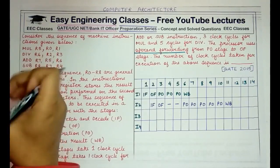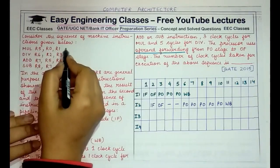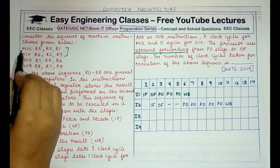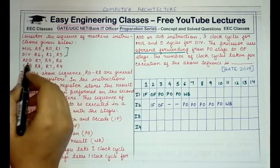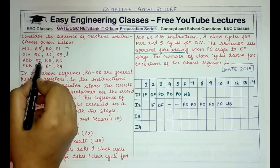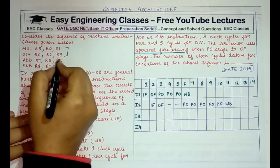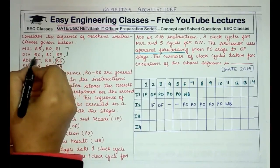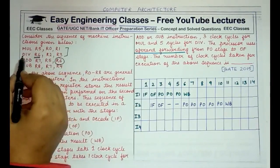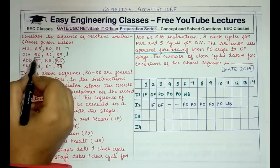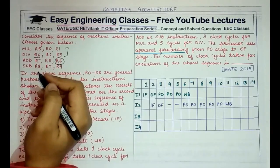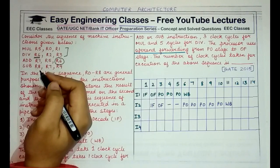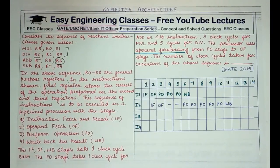I1 used R1, R0, and R5; I2 performed division on R2, R3, and R6 — no overlapping operands between them. But I3 (add) uses R7, R5, and R6, and R6 is the value returned by I2. The result of I2 was stored in R6, and we need R6 as an operand in I3. Normally we'd wait until R6 is written back to memory, but this is where operand forwarding comes in.